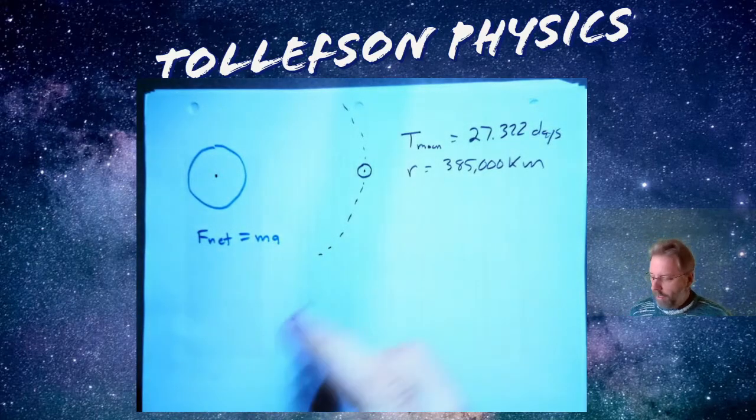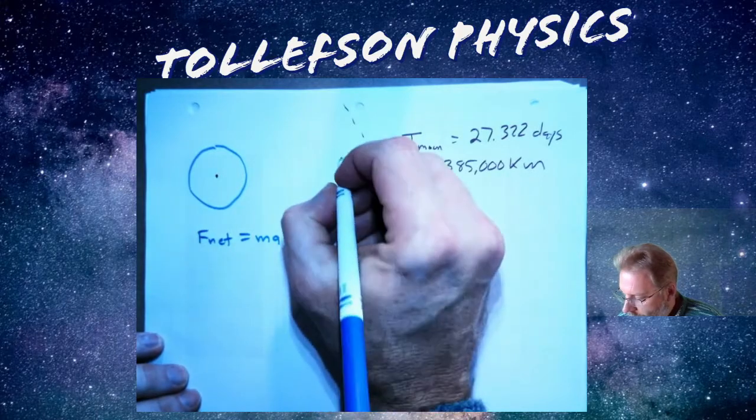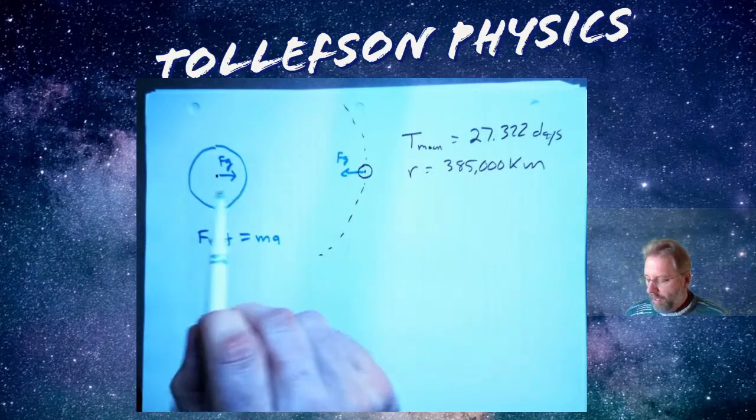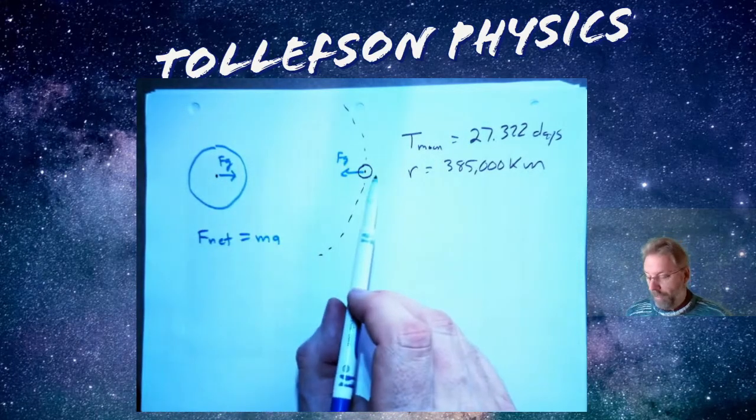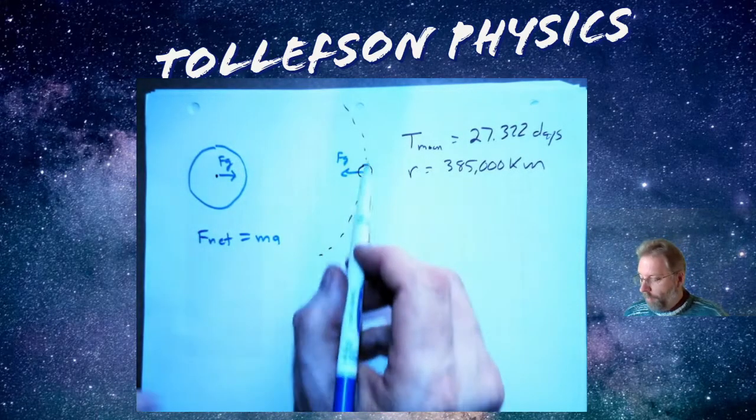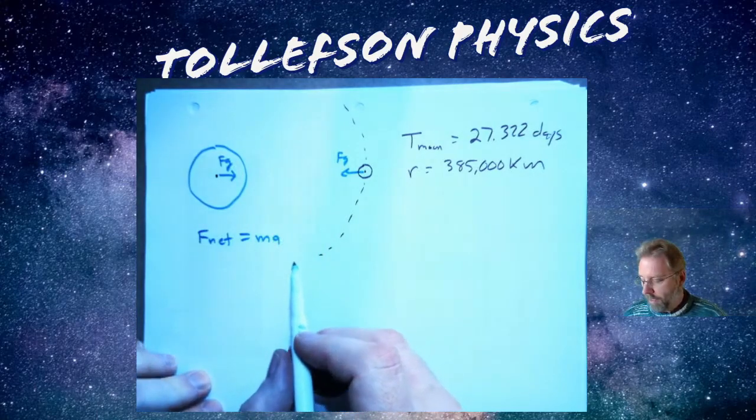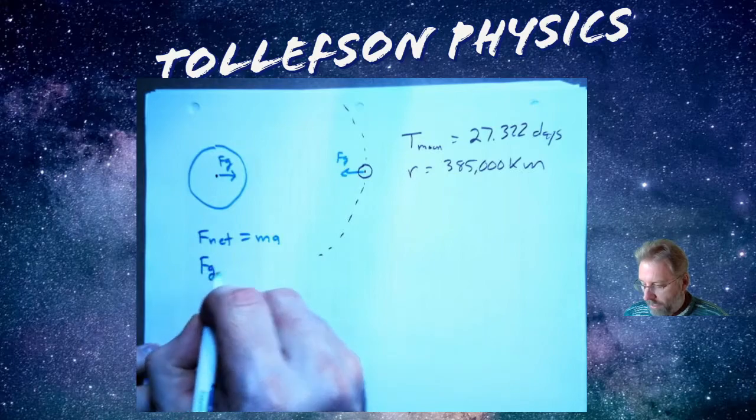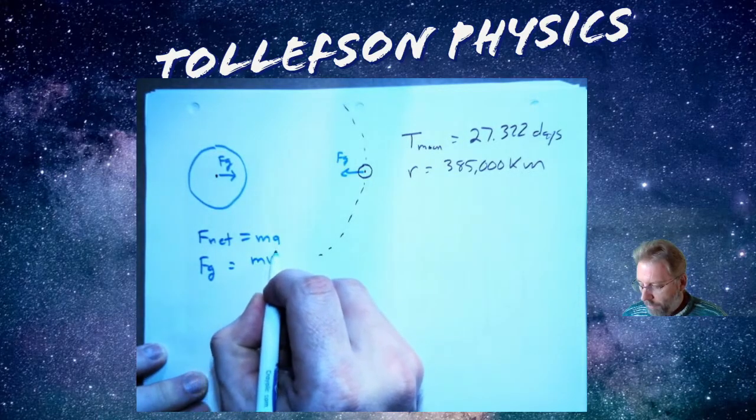In this particular case we have force due to gravity and yes there's an equal and opposite force due to gravity on the earth by the moon as well. Okay but we're focused on the moon in this particular case. So what is the force that we're talking about? It's the gravitational force and we're going in a circle.